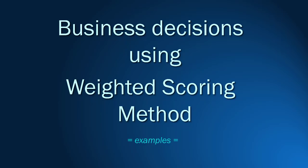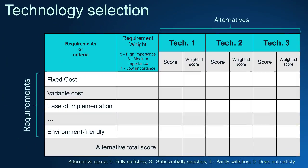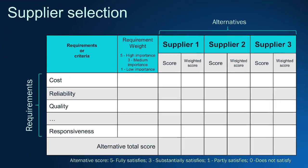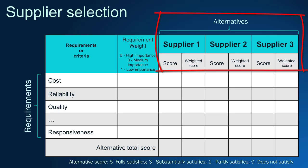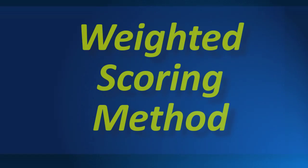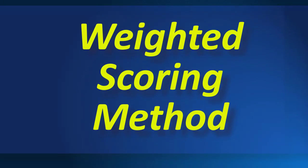Let's check some practical business applications. This example shows how to select a technology — you can see technological alternatives in the columns and business requirements in the lines, then evaluate each technology against each requirement to identify the most suitable. This example shows how to approach supplier selection: suppliers are placed in the columns and company business requirements in the lines. By providing ratings and scores for each supplier, you find the best supplier. Thanks for watching — I wish you the best as you apply the weighted scoring method in your assignments and professionally.